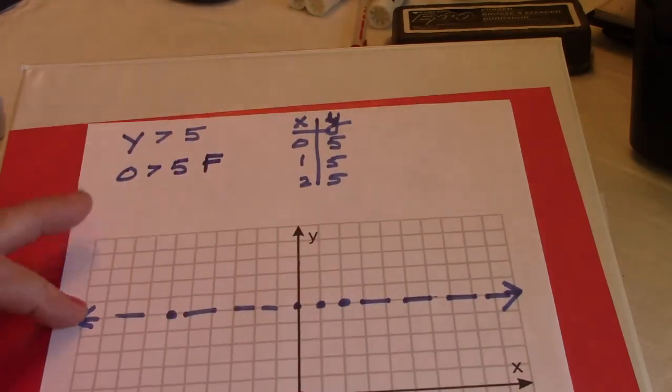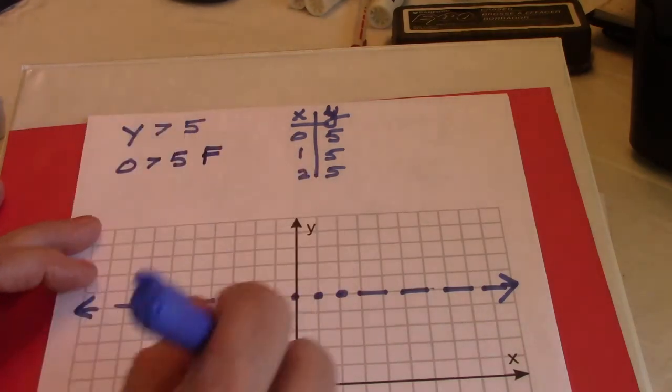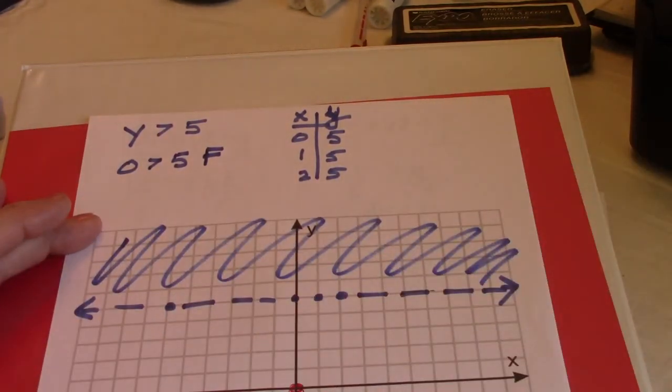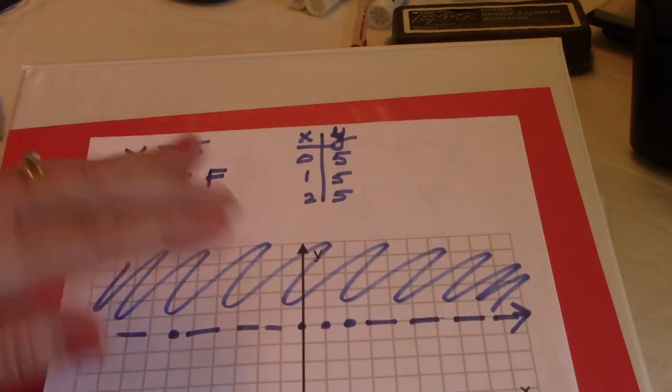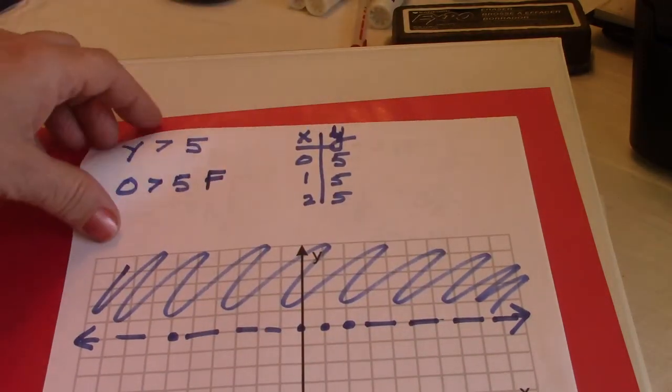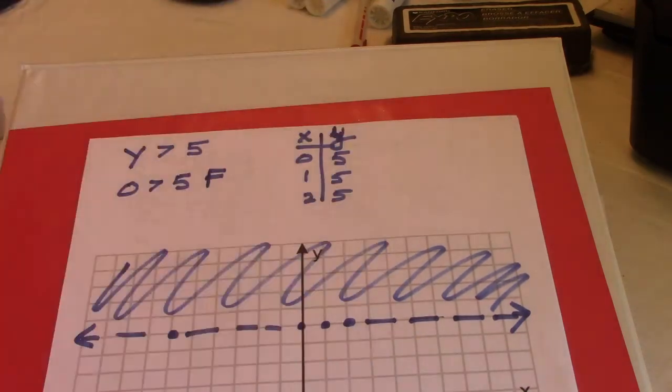That is false. Since it is false, I can't use that point. So my graph, again, it's greater than above. That's maybe an easier way to remember it. Sometimes you get points that are kind of awkward, but greater than is above. Less than would be below.